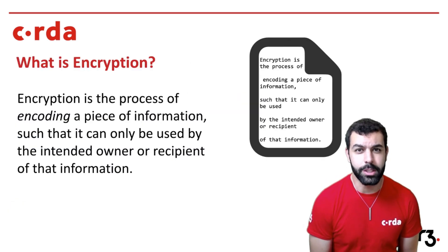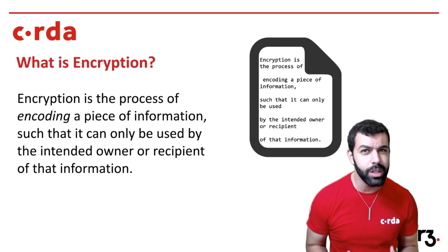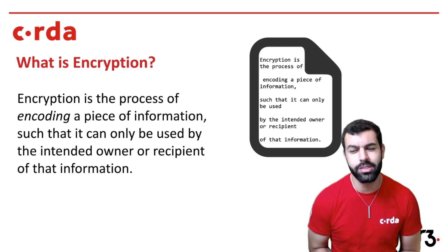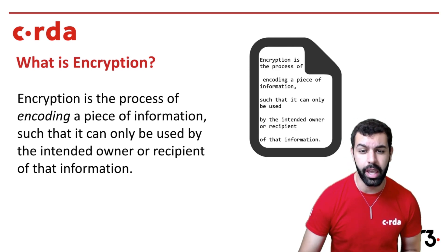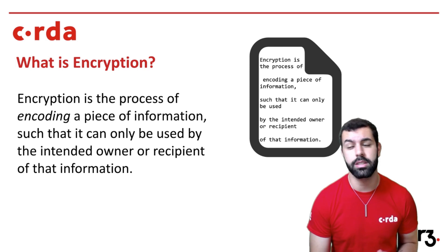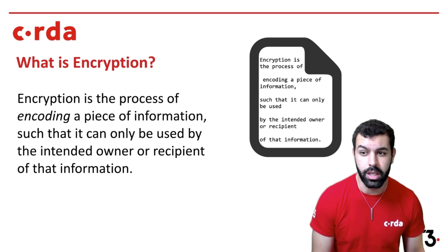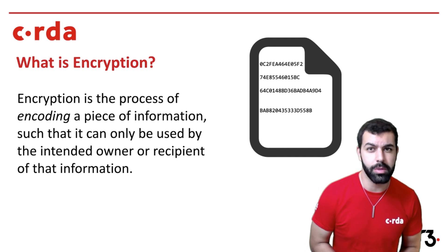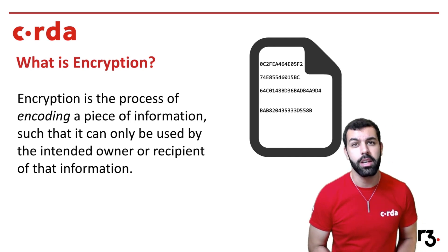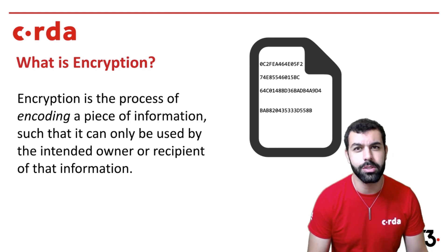What is encryption? Encryption is the process of encoding a piece of information such that it can only be used by the intended owner or recipient — taking a message and turning it into something that can't actually be used unless it is given to the actual recipient. If you found this message, you wouldn't know what to do with it because you weren't the person intended to receive it, and unless you knew how it was constructed, you wouldn't be able to convert it back into the original message.